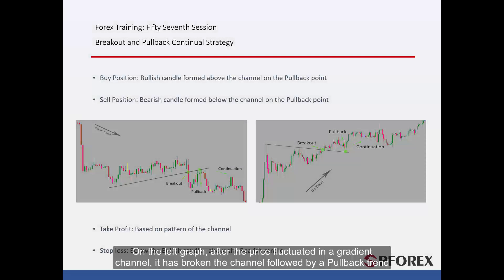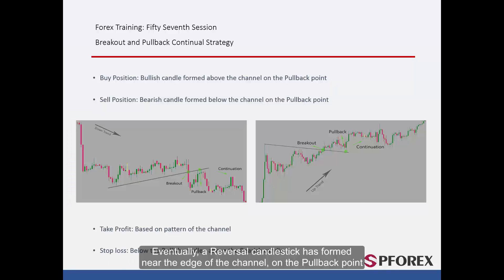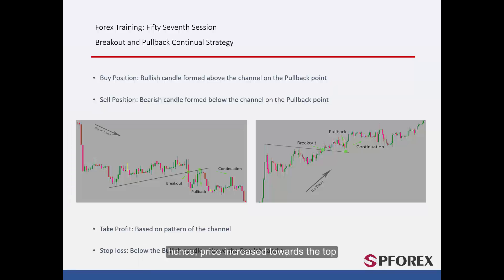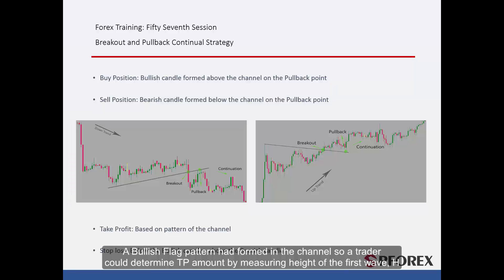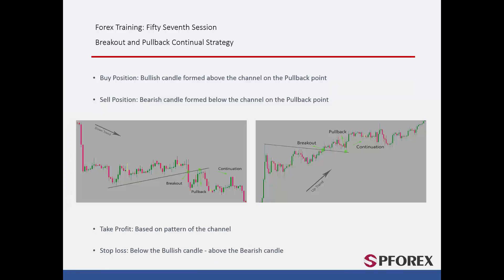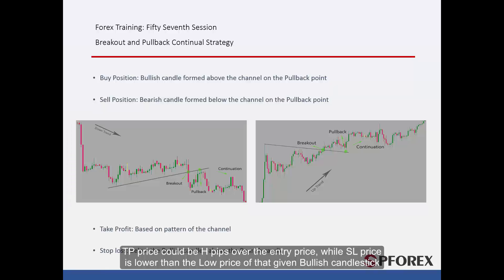On the left graph, after the price fluctuated in a gradient channel, it has broken the channel followed by a pullback trend. Eventually, a reversal candlestick has formed near the edge of the channel on the pullback point, hence price increased towards the top. A trader could place a buy order over the bullish candle that has formed completely. A bullish flag pattern had formed in the channel, so a trader could determine TP amount by measuring the height of the first wave, H. TP price could be H pips over the entry price, while SL price is lower than the low price of the given bullish candlestick.